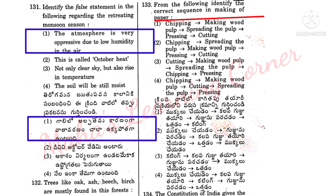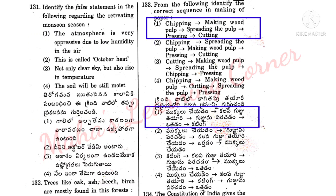Identify the correct sequence in making paper. Krindi vatil lho kaihitappu thayari prakkriyil lho ni varusukramani guttin chandhi. Correct answer, Option 1: Chipping, making wood pulp, spreading the pulp, pressing and cutting. Mokkaloo chayadum, kalapagujju thayari, gujju nu parachadum, vatthadum, cutting. Option 1 is the correct answer.